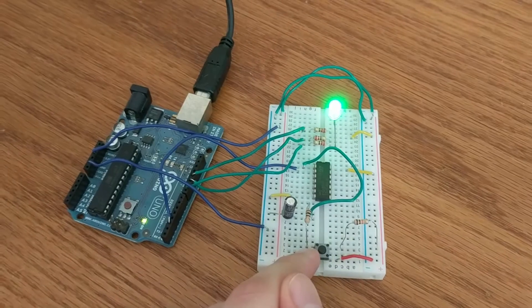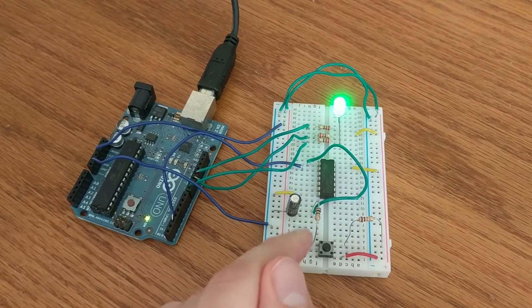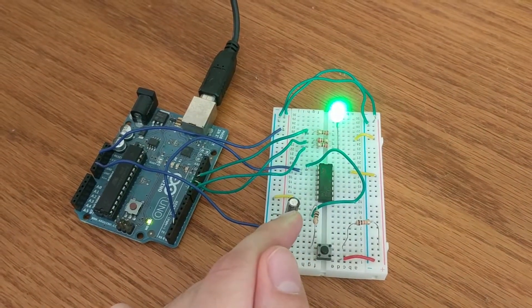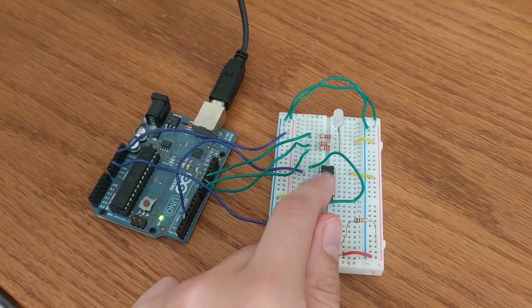When we press the button, the signal travels through this RC filter network—that's this resistor and this capacitor here—and then into the inverting Schmitt trigger right here.